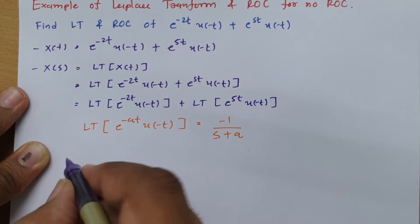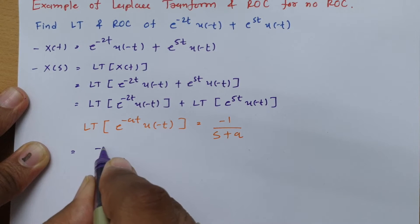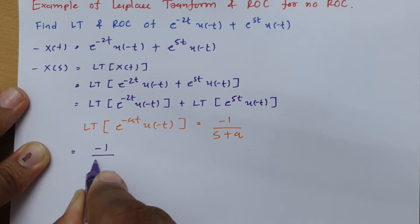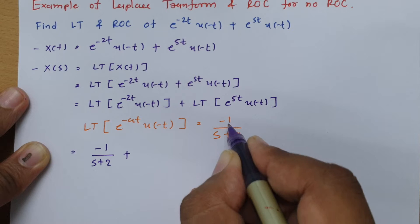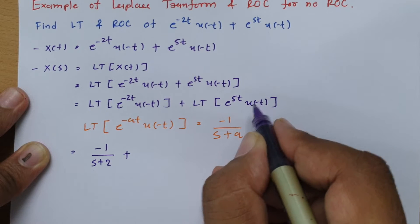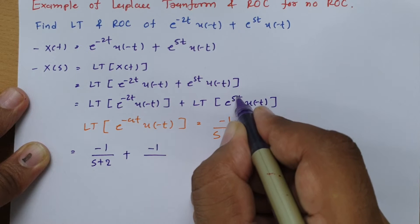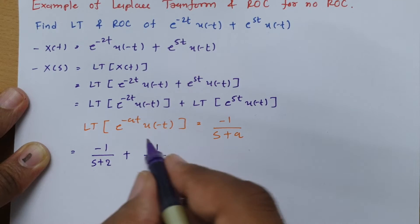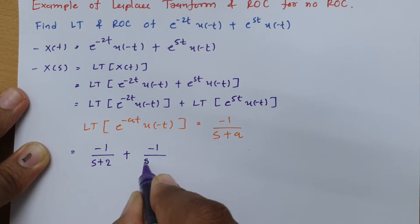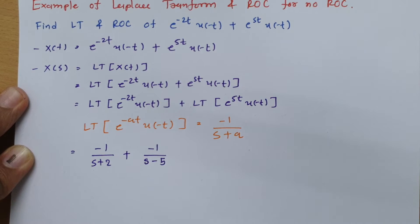So the Laplace transform of the first term gives -1/(s+2). For the second term, u(-t) is present and a equals -5, so the result is -1/(s-5). This is how we calculate the Laplace transform of the combined signal.